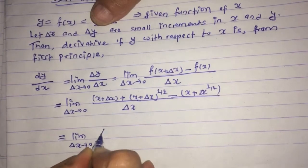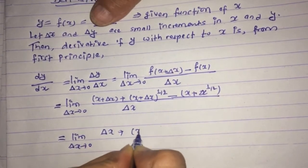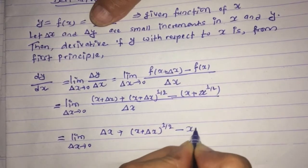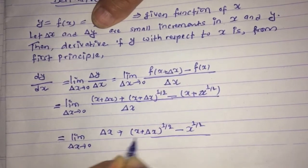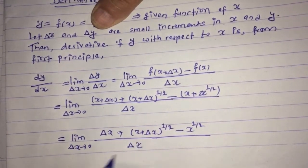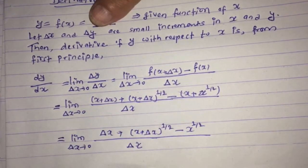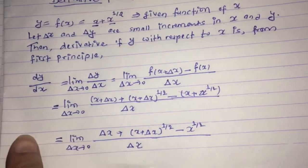This is again equal to limit as δx tends to 0. Opening the bracket, it becomes δx plus (x + δx)^(1/2) minus x^(1/2), because the plus x and minus x cancel out. This is divided by δx.